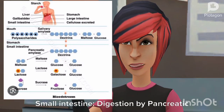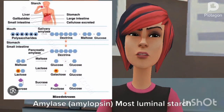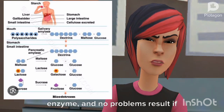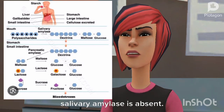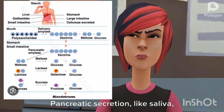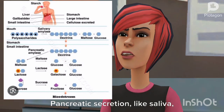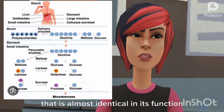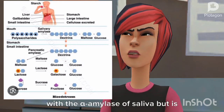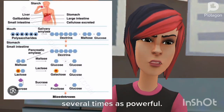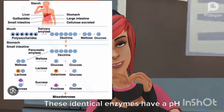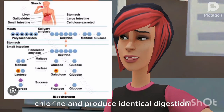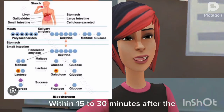In the small intestine, digestion by pancreatic amylase — amylopsin — takes over. Most luminal starch digestion is carried out by the pancreatic enzyme, and no problems result if salivary amylase is absent. Pancreatic secretion contains a large quantity of alpha-amylase that is almost identical in its function with salivary alpha-amylase, but is several times as powerful. These identical enzymes have a pH optimum near 7.1, are activated by chlorine, and produce identical digestion products.